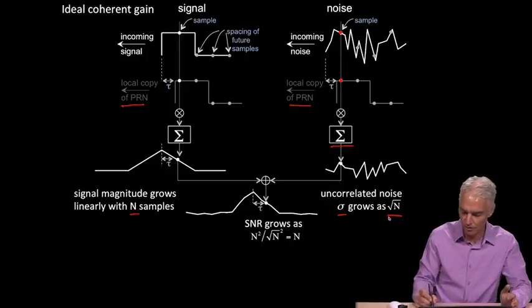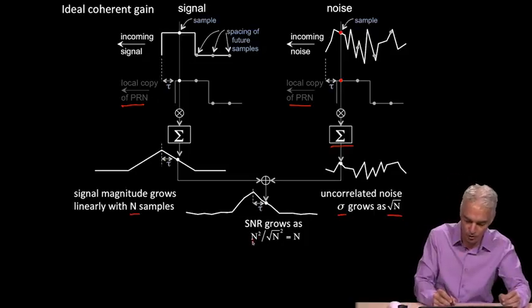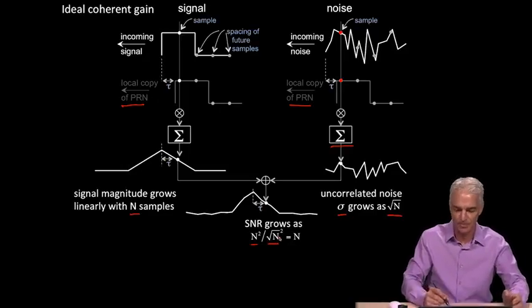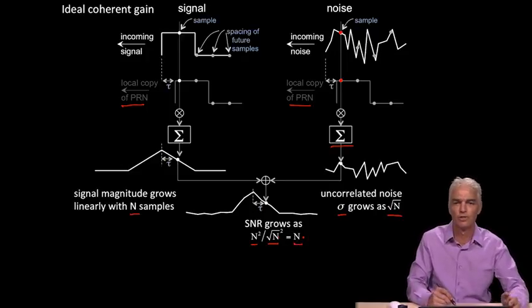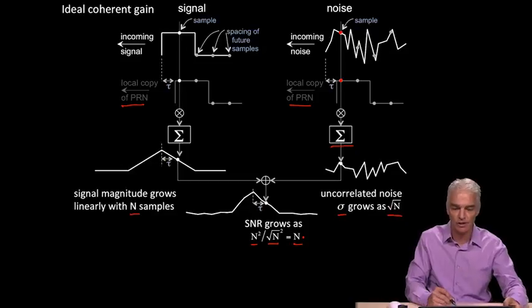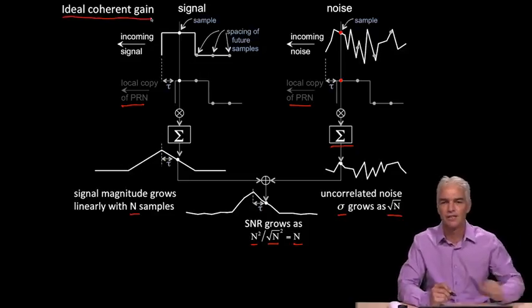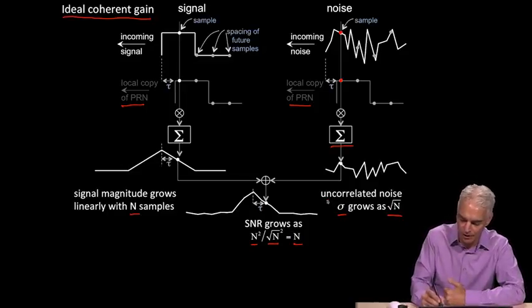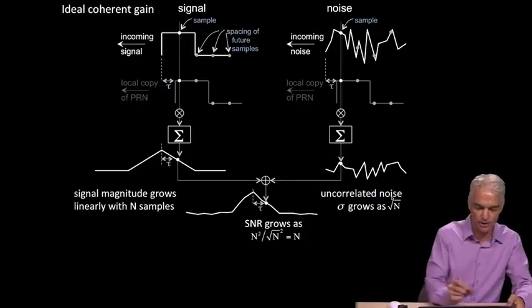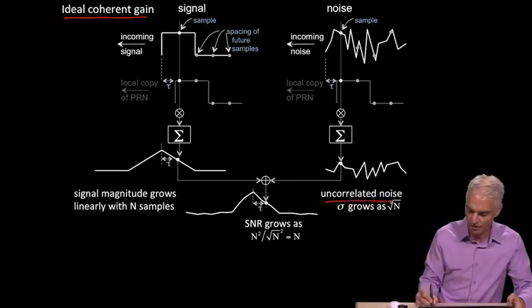The standard result for uncorrelated noise is that the standard deviation, sigma, of the sum of N terms is the square root of N times the standard deviation of one sample. So the standard deviation grows as the square root of N. Now we can see what the gain is going to be of the signal and the noise together. The signal grows by N, the noise grows by root N. And so the signal-to-noise ratio, which is defined as the power of the signal, which is proportional to N squared, over the power of the noise, which is proportional to the noise standard deviation squared, is just simply N squared over root N squared. So the SNR, signal-to-noise ratio, grows as N. That's the result we're looking for for the ideal coherent gain.